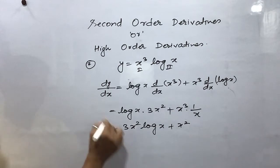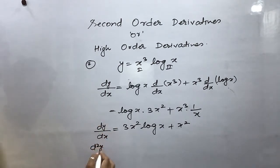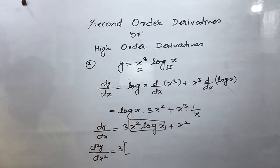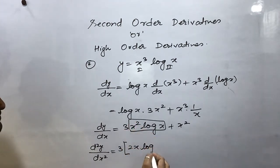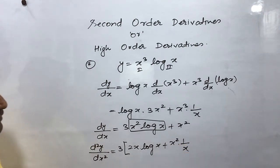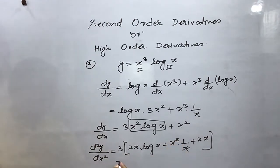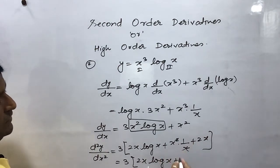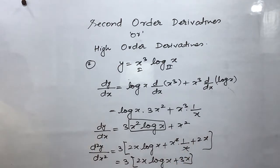I have differentiated it once. For the second-order derivative, I will directly write d²y/dx². Here the 3 stays outside. Differentiating again using product rule — x² · d/dx(log x) + log x · d/dx(x²) = x² · (1/x) + log x · 2x = x + 2x log x. And separately + x² differentiates to 2x. So the answer, multiplying through by 3: d²y/dx² = 6x log x + 3x + 2x.